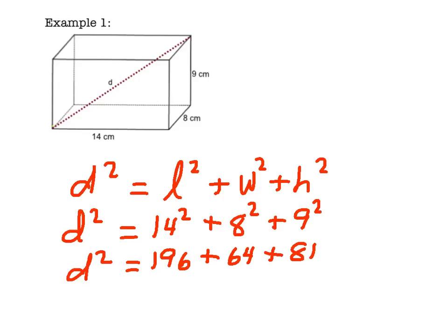Our next step is to total up our terms, so we still don't know D. If I add 196 plus 64 plus 81, I get 341.